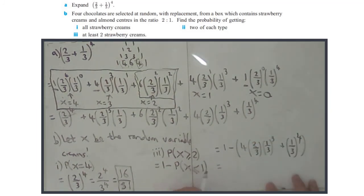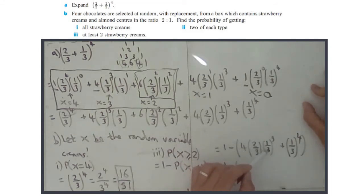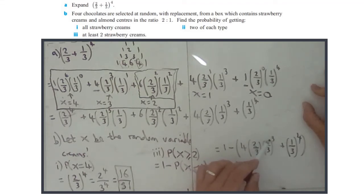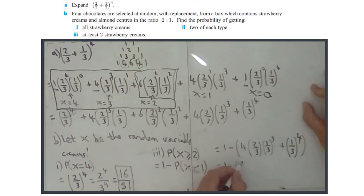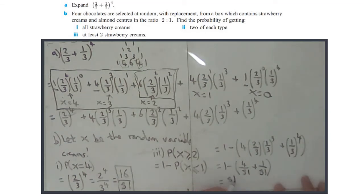We're taking that away from one. One-third cubed is one over 27, and three to the power of four is 81. So the first term gives us: four times two times one over 81, which is eight over 81. Wait — one times two is two, times four gives four over 81. Plus one-third to the fourth is one over 81. So it's one minus five over 81, which is 81 over 81 minus five over 81, leaving us with 76 over 81.